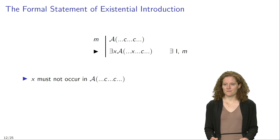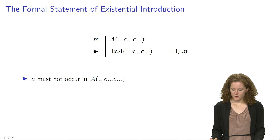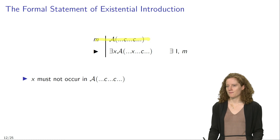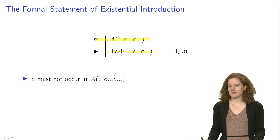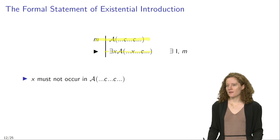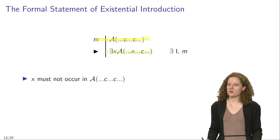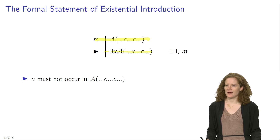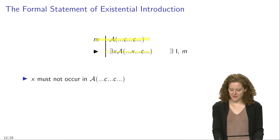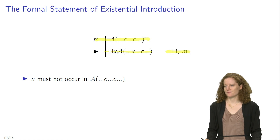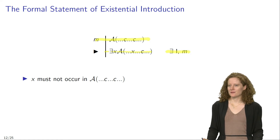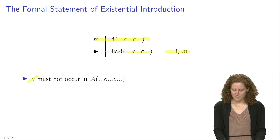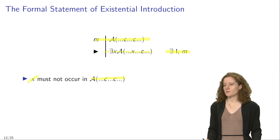Formally, the rule looks like this. If in line M of your proof you have a sentence AC that contains one or more occurrences of the name C, you can then infer that there is an X such that AX, where in the sentence embedded in the scope of the existential quantifier you replace one or more occurrences of the name C by the variable X. You can justify this inference by existential introduction applied to line M. To apply this rule properly, you need to pay attention to one important constraint: the variable X must not occur in the sentence AC that appears in line M.